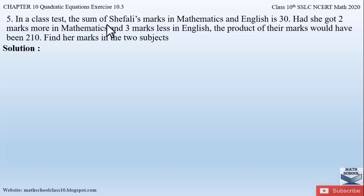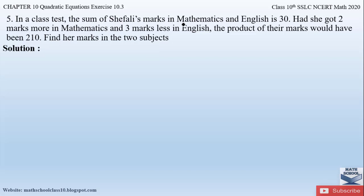In a class test, the sum of Shifali's marks in mathematics and English is 30. Had she got two marks more in mathematics and three marks less in English, the product of their marks would have been 210. Find her marks in the two subjects. So here what they have given is the sum of Shifali's marks in maths and English is 30, meaning maths plus English equals 30.